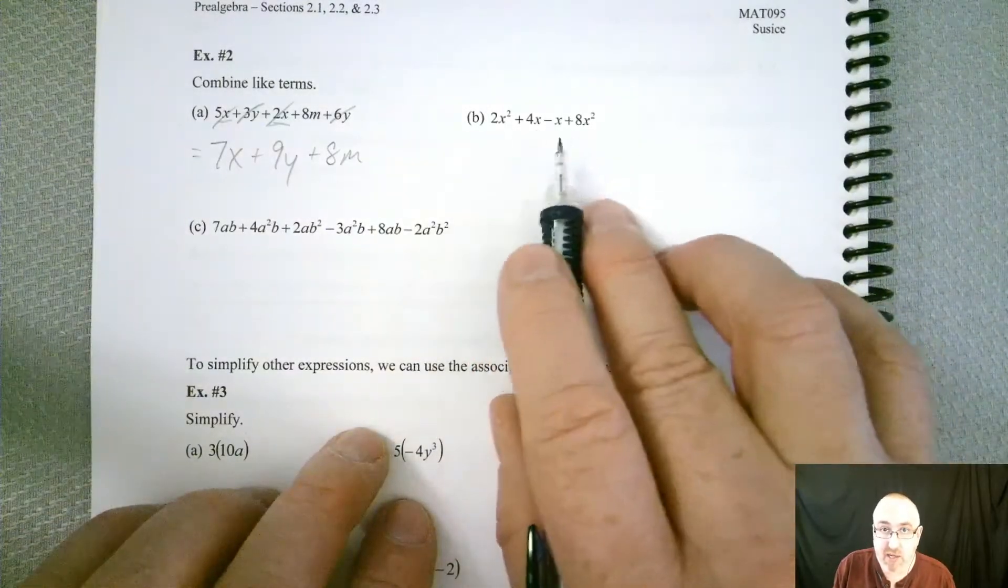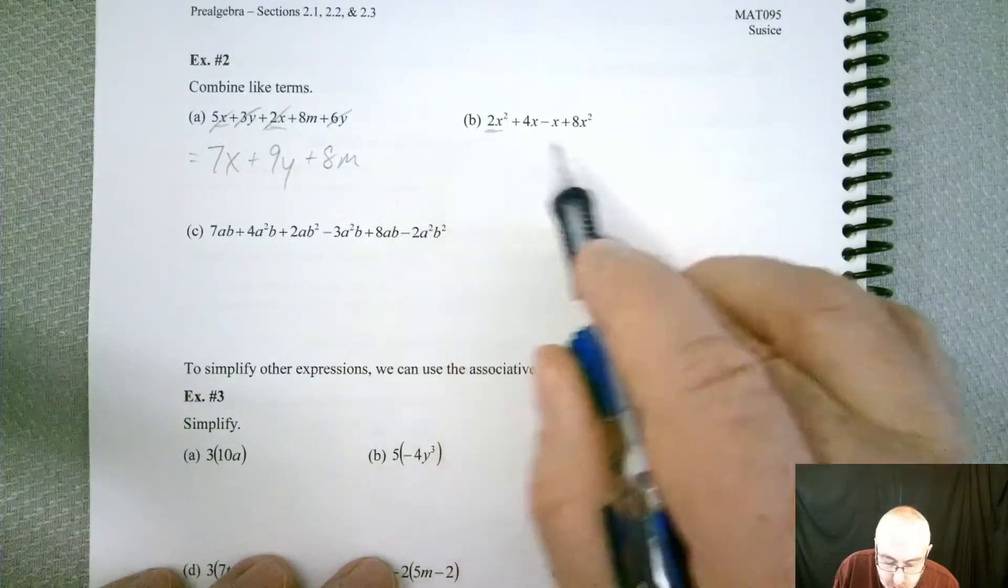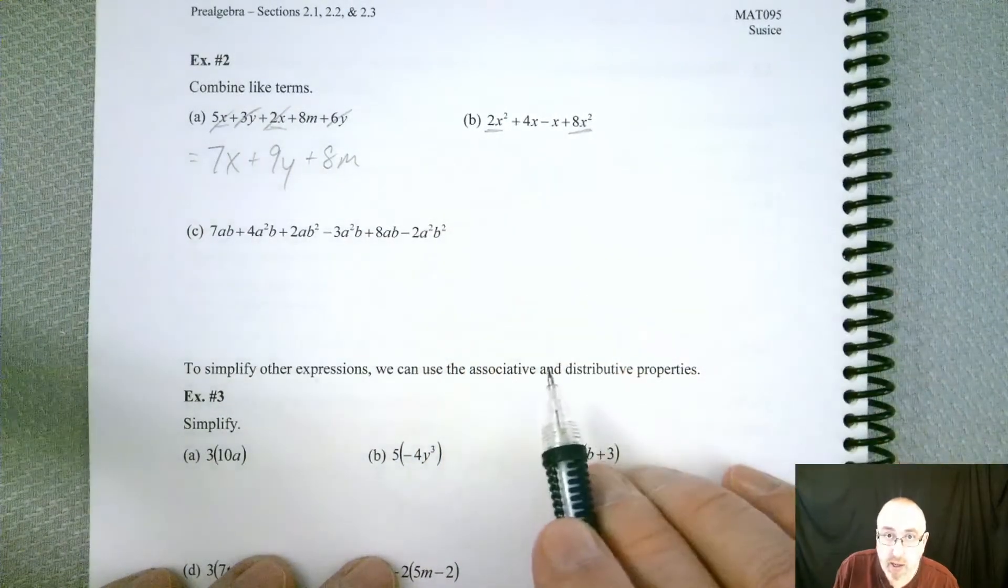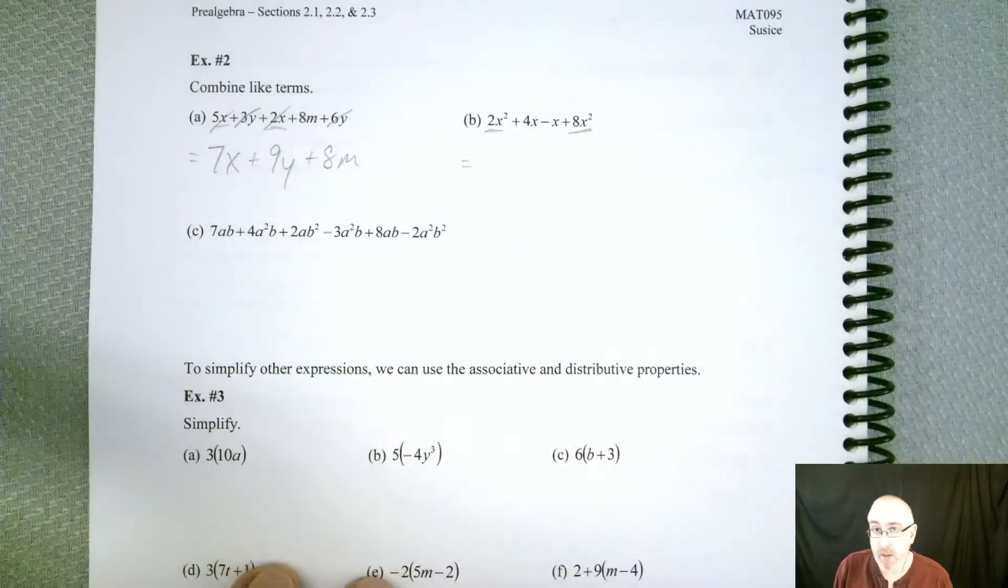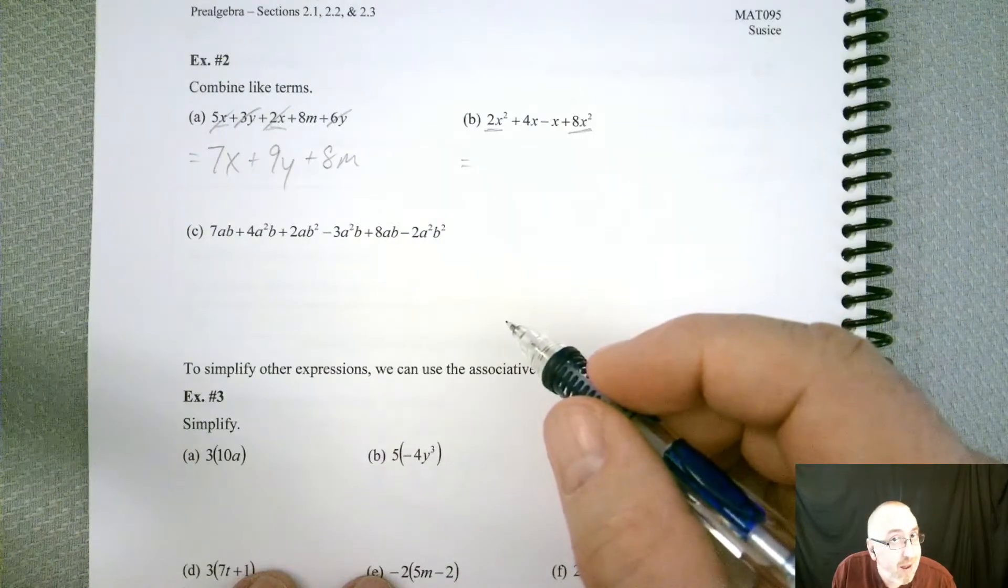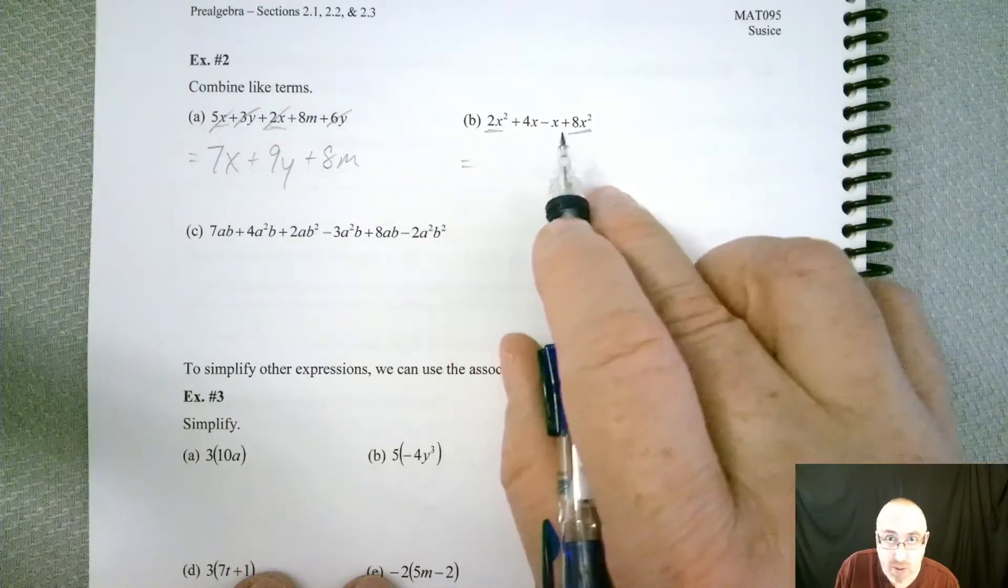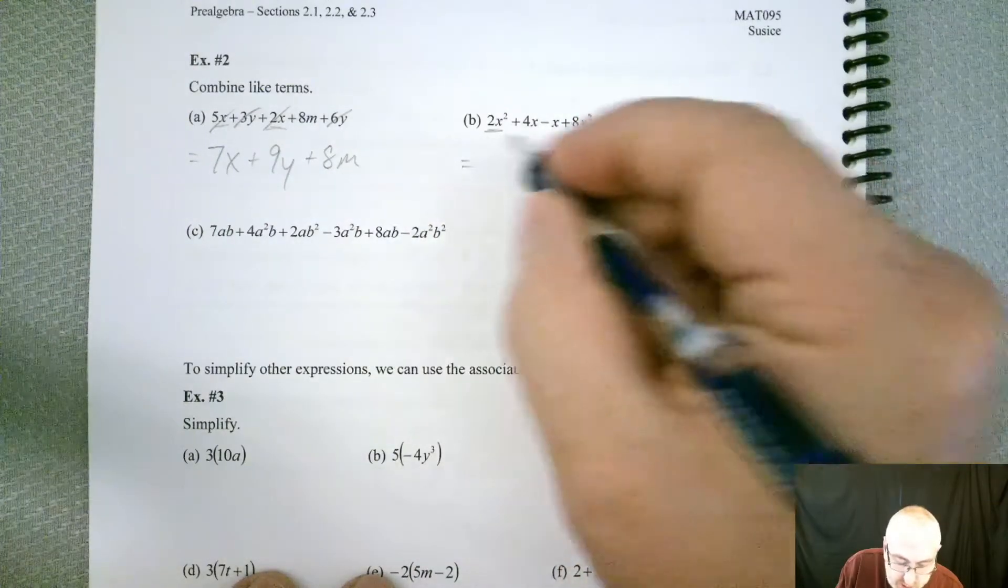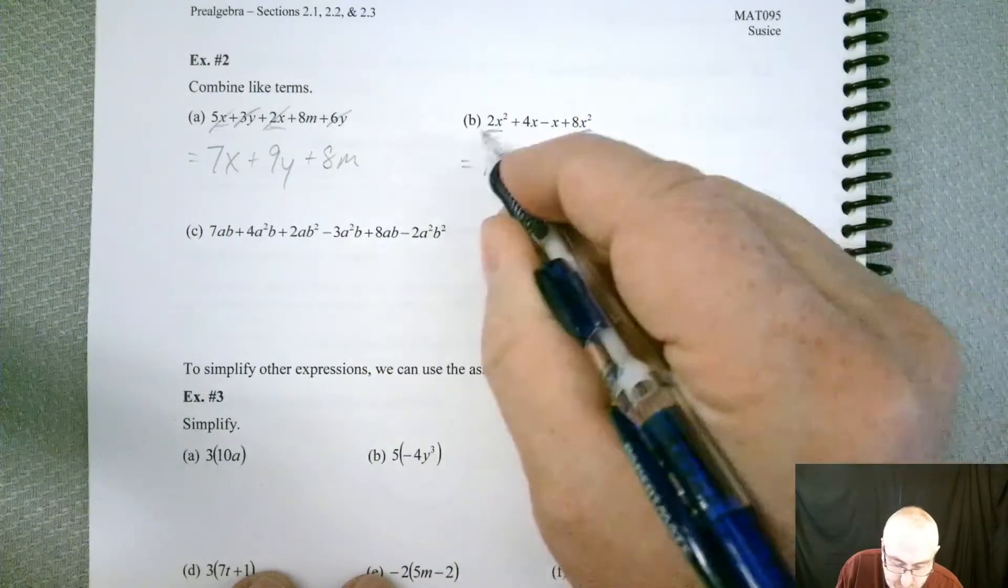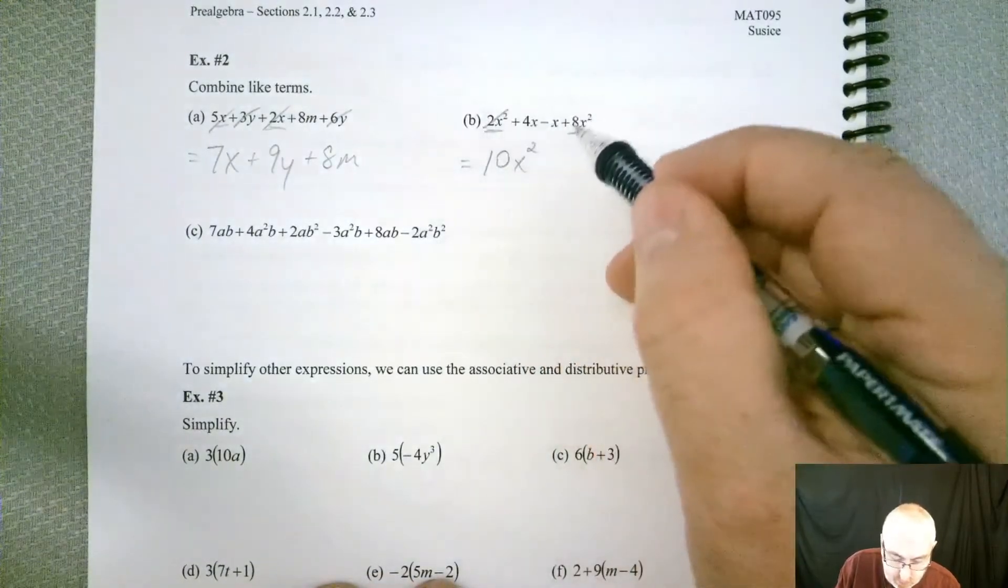All right, let's take a look at our x's and x squares problem. Now, we already said that the 2x squared and the 8x squared go together. So what should that combine to? So, 10x to the 4th? No. Remember, exponents don't change. The variables don't change. So all you're doing is changing the numbers in front. So we show you the total of 10x to the 2nd. So that takes care of those.